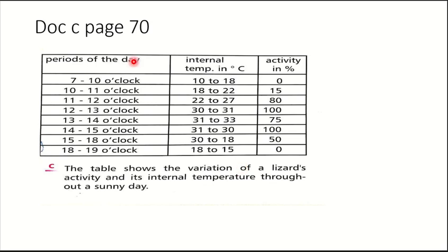Finally, describe the relation between the lizard's activity and its internal temperature. The activity of the lizard is null when its temperature is below 18 degrees Celsius. This activity begins when the internal temperature rises higher than 18 degrees Celsius, to become optimum or maximum at 30 degrees Celsius. Beyond this temperature, the heat reduces the lizard's activity again — as it passes from 31 to 33 degrees Celsius, the activity decreases.